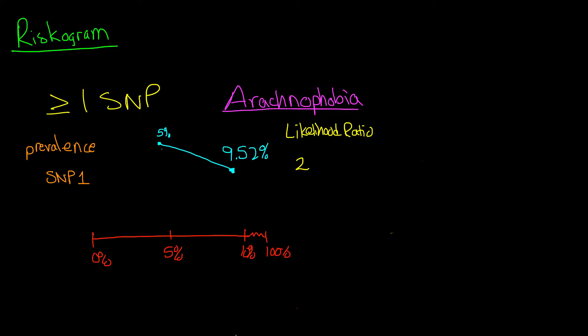This image here is just copied from the last video as a starting point. Down here we have our axis, we have our prevalence of 5%, and with SNP1, 9.52%. So we started in the USA, and that was our 5% prevalence.